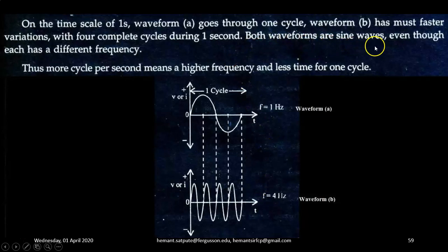Both waveforms are sine waves, even though each has a different frequency. The frequency of waveform A is 1 Hertz, while the frequency of waveform B is 4 Hertz. Thus, more cycles per second means higher frequency and less time for one cycle.